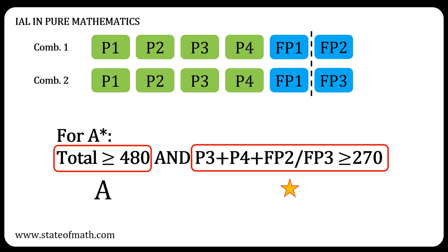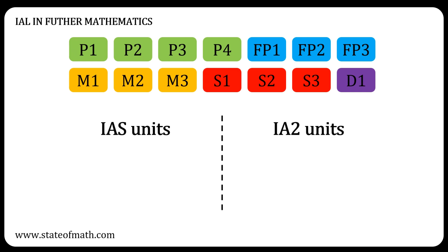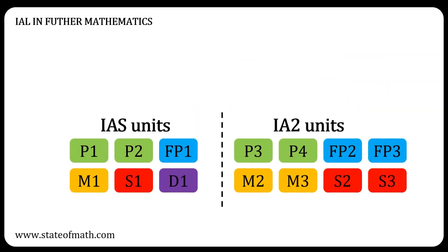For the IAL in further mathematics, things are a bit more complicated. First, we will divide the units into two categories: the IAS units, which can be used for the IAS certificates, and the IA2 units, which can only be used for the IAL certificates. In general, the IA2 units are harder than the IAS units. As you can see, there are six IAS units and eight IA2 units.